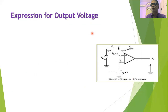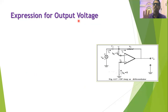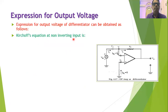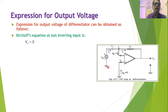Now we can prove that the output voltage of this circuit is proportional to the differentiation of the input voltage. To prove this, we need to analyze the circuit. Whenever we want to analyze an operational amplifier circuit, it is possible to do so in three steps. In the first step, we will write the Kirchhoff's equation for the non-inverting input of the operational amplifier. The non-inverting input is grounded, and therefore we can write V plus is equal to zero.